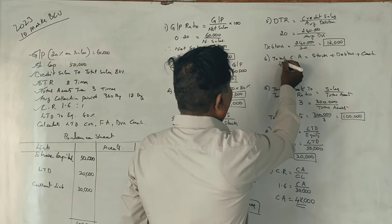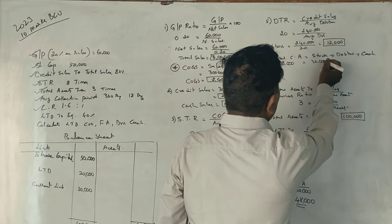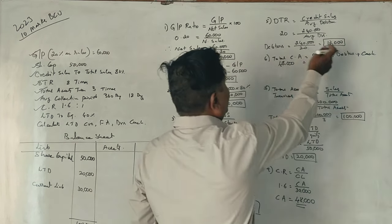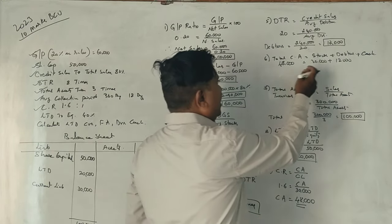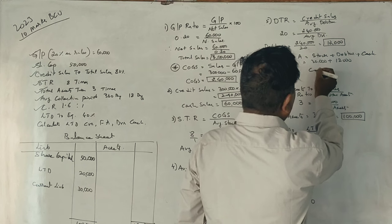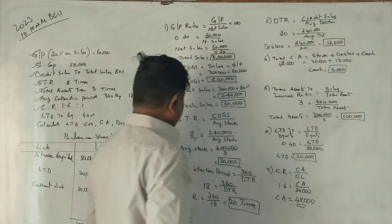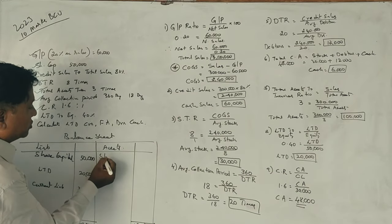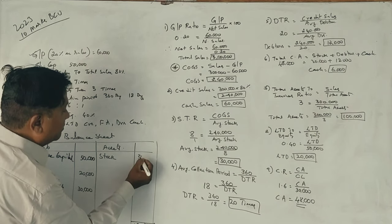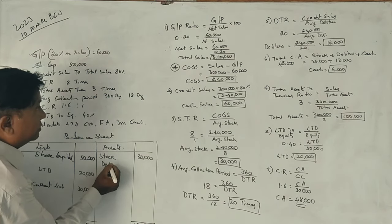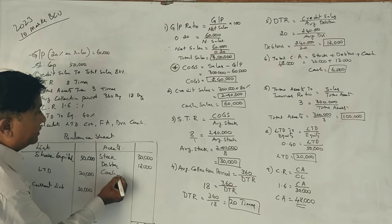Current assets are Rs. 48,000. Breaking down current assets: cash is Rs. 6,000, stock is Rs. 30,000, and debtors are Rs. 12,000.